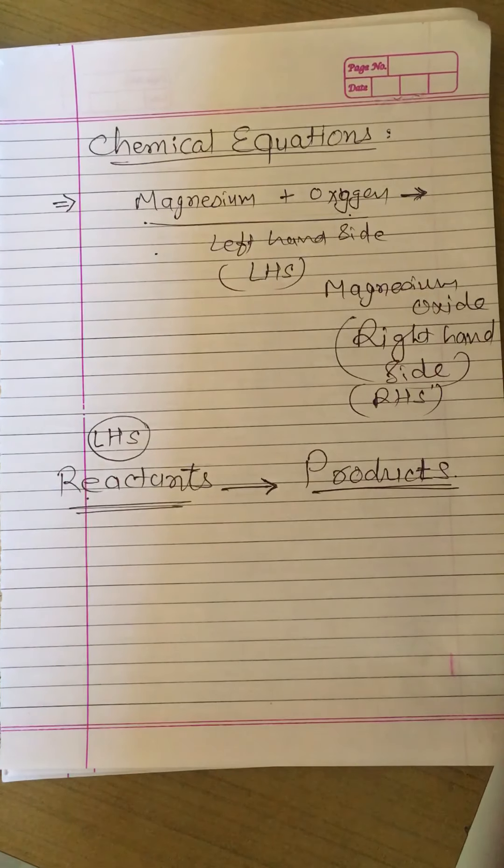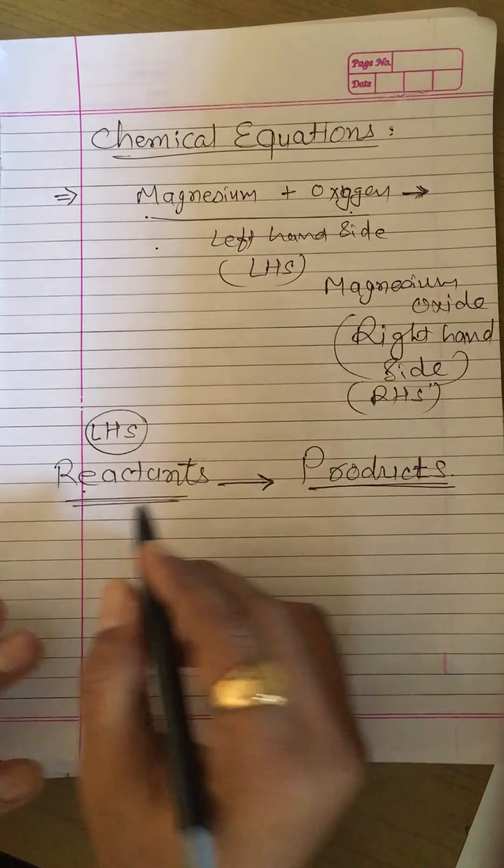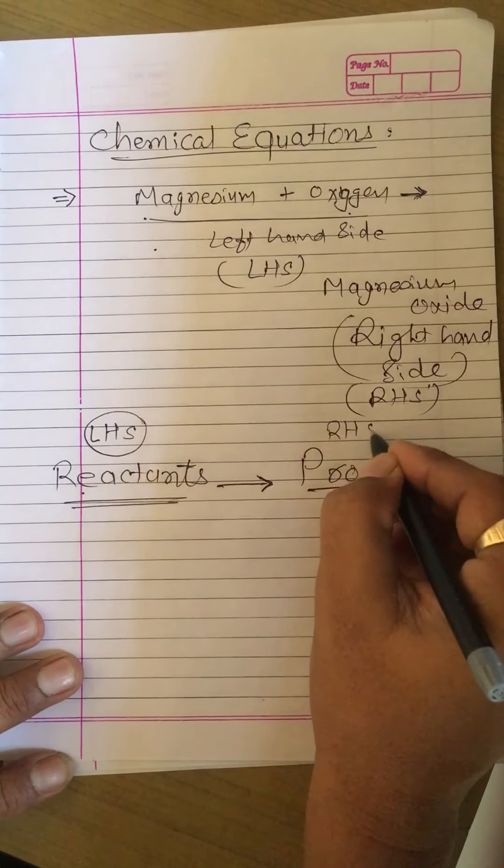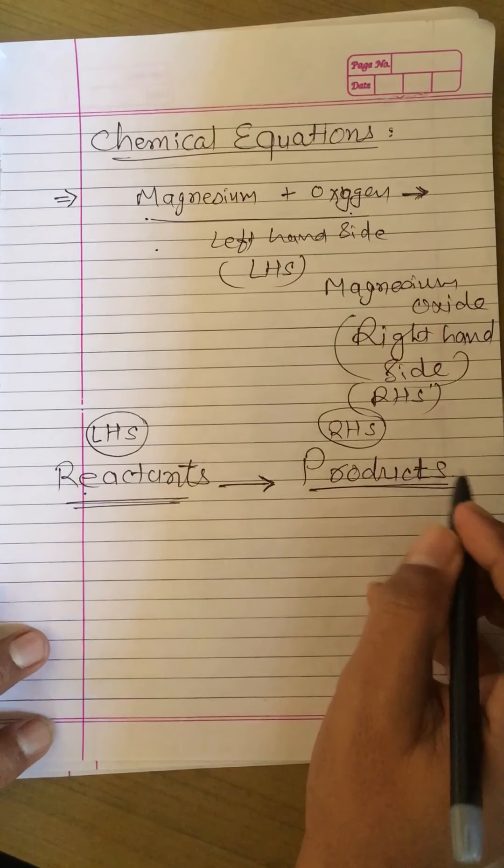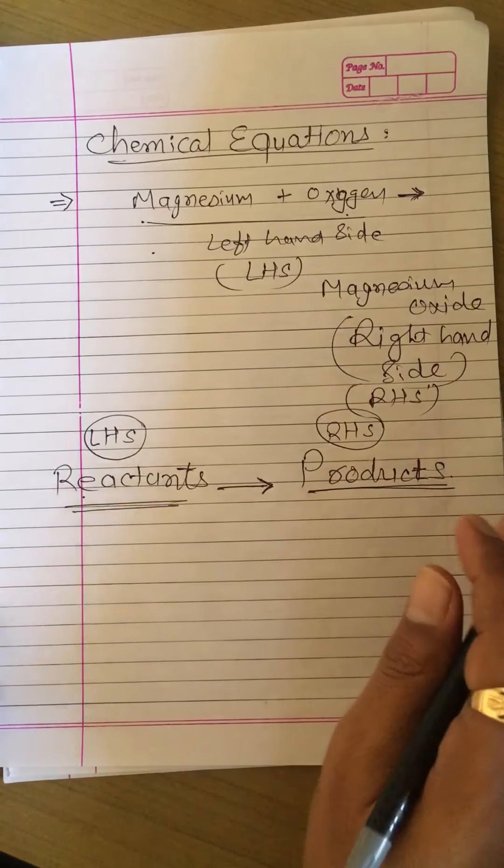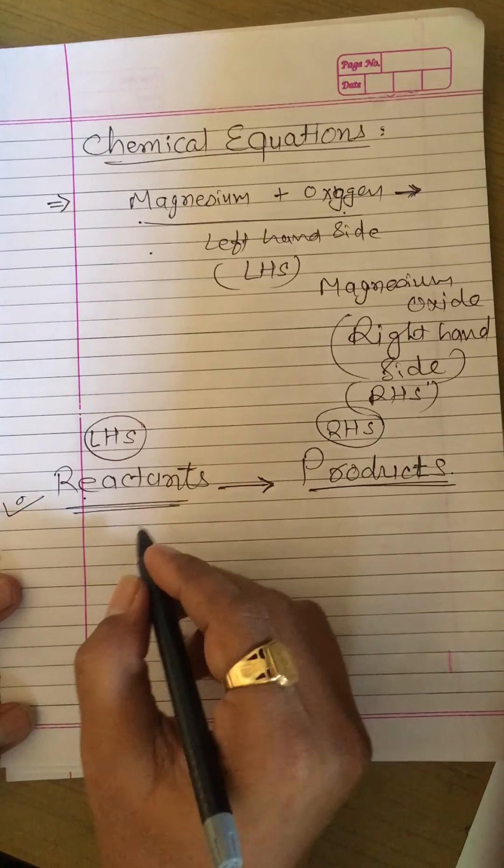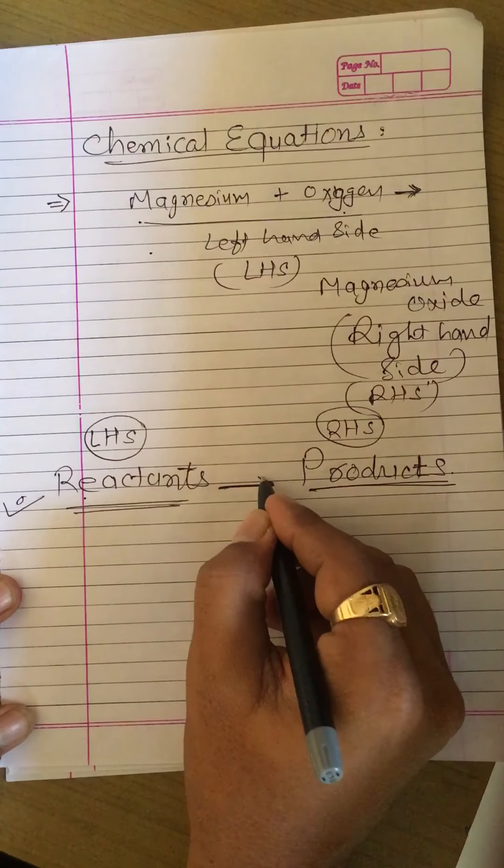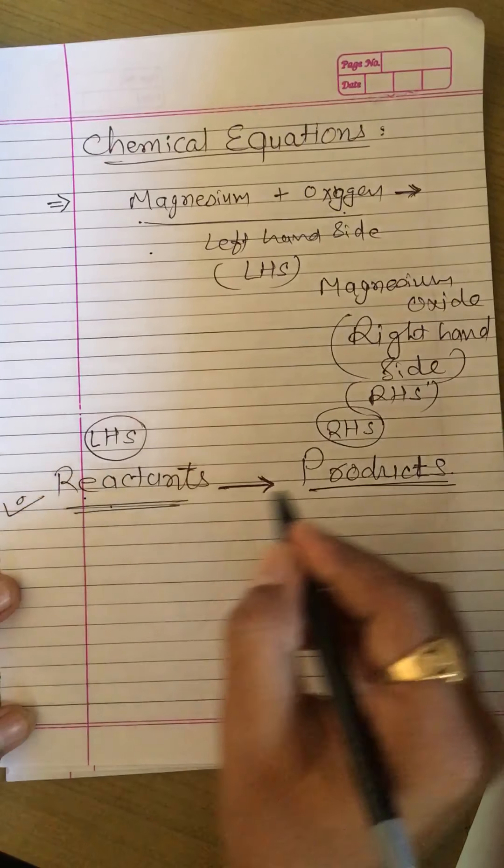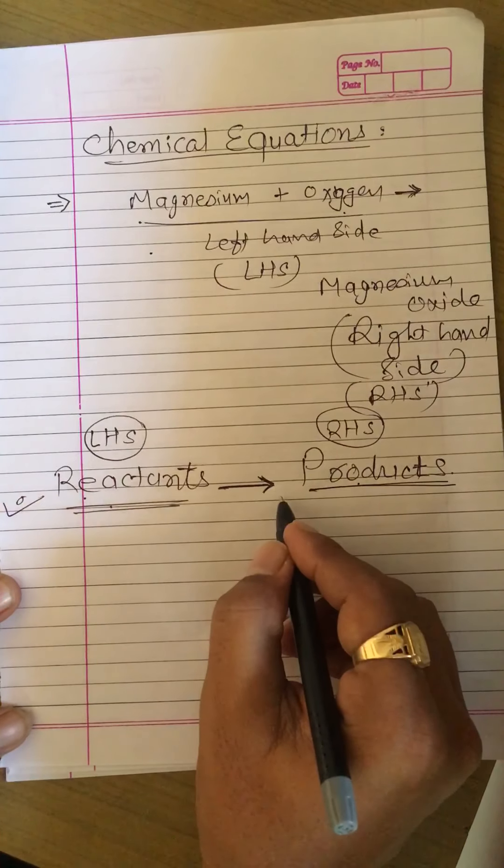Friends, reactants are written on left hand side and on right hand side products are always written in a chemical reaction. So when we describe a normal chemical reaction, one arrow from reactants to products is shown like this.